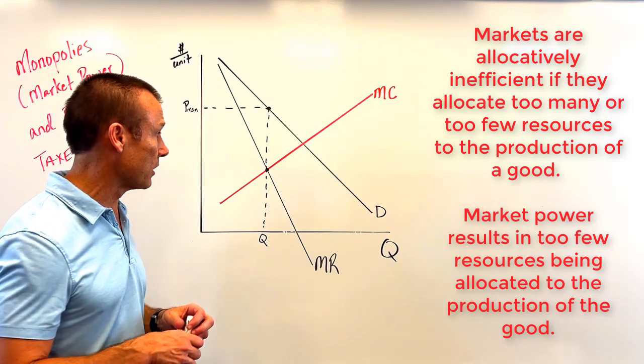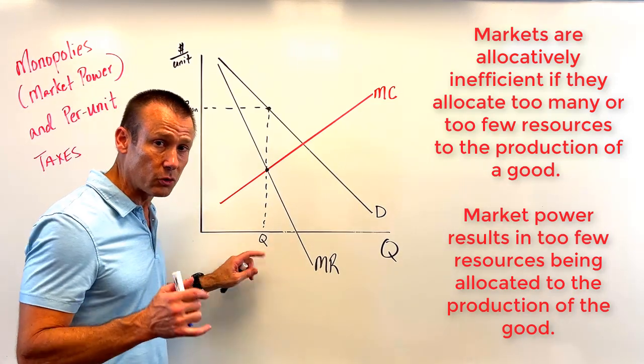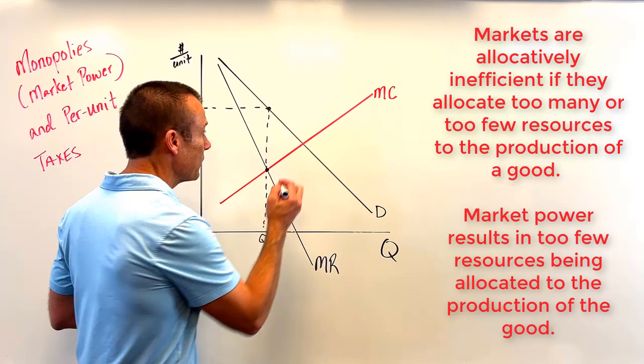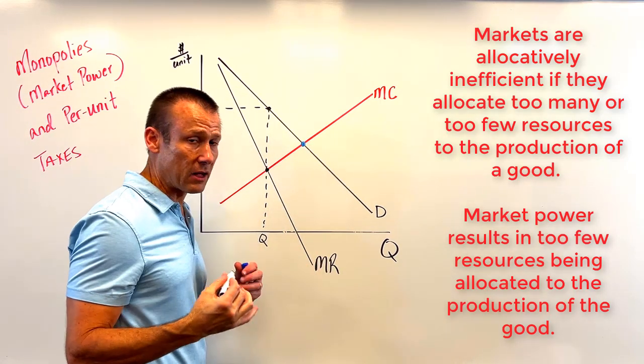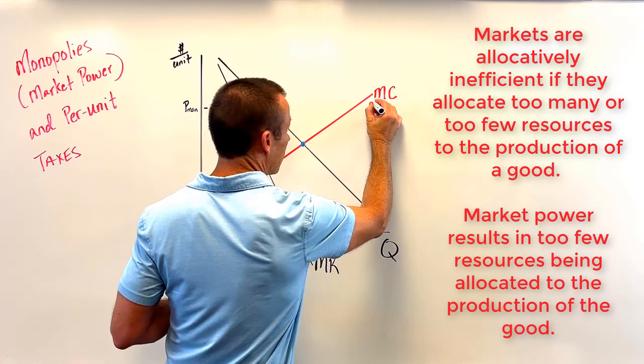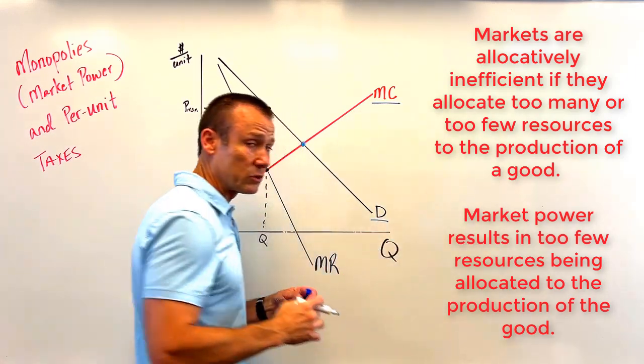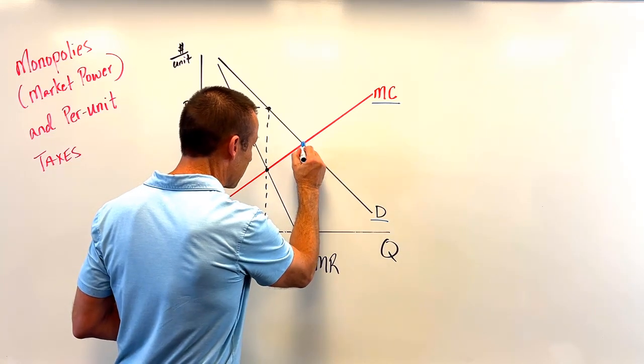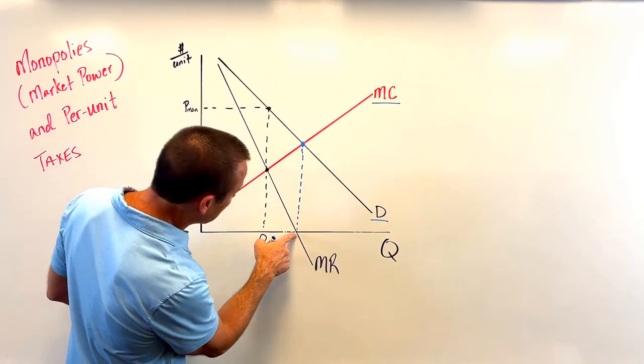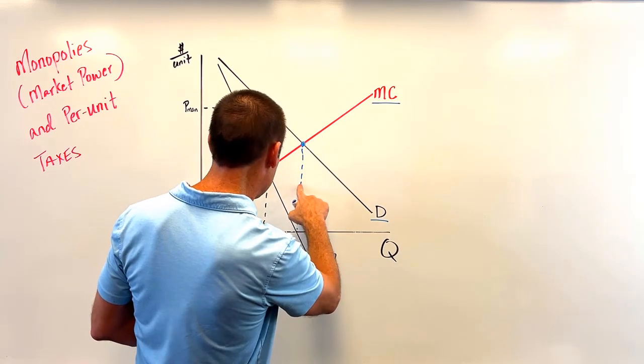We're going to allocate resources to the production of the good. You can see this is my Q, and what's my Q optimal? Well, my Q optimal, if we have no externalities—assuming no externalities—is where my MC, which would be my MSC if there's no externalities, and my demand, which would be my MSB, intersect. I'm going to bring that down.